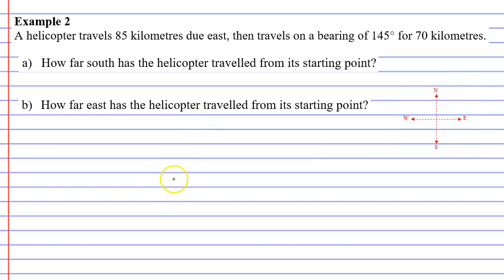In this video, we've got a complete example two, which says a helicopter travels 85 kilometers due east, then travels on a bearing of 145 degrees for 70 kilometers.